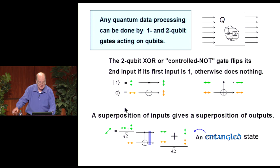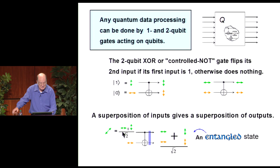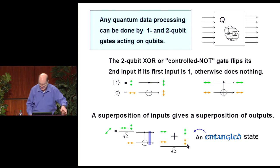What does a superposition of inputs do to the CNOT gate? It's a quantum computing element, so it has to obey the superposition principle. A superposition of inputs is a direction intermediate between horizontal and vertical—for example, a 45-degree diagonal direction. What it produces is not a rotation of the target qubit by half the angle; it produces a superposition of the two situations. That means it produces a superposition of both photons being horizontal and both photons being vertical. That's called an entangled state.